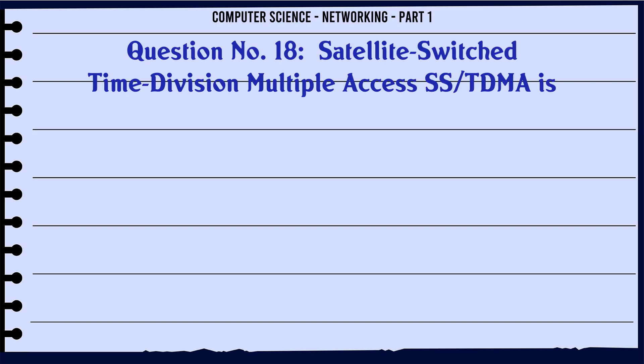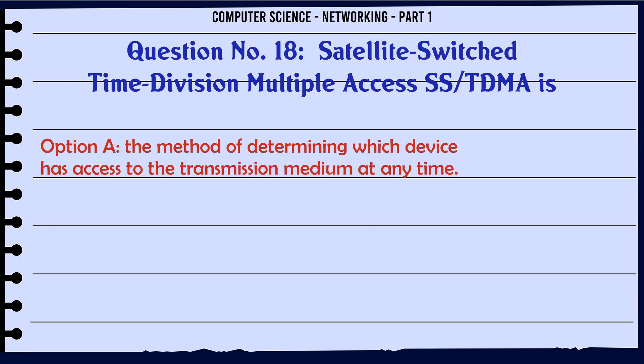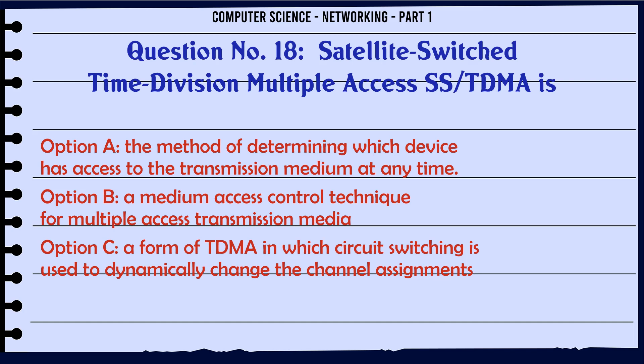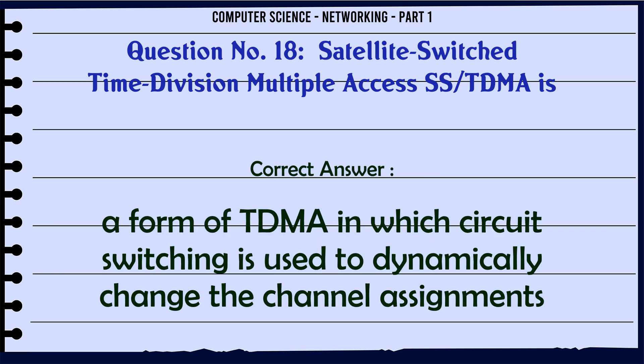Satellite switched time division multiple access (SSTDMA) is: A. A method of determining which device has access to the transmission medium at any time. B. A medium access control technique for multiple access transmission media. C. A form of TDMA in which circuit switching is used to dynamically change the channel assignments. D. All of the above. The correct answer is: A form of TDMA in which circuit switching is used to dynamically change the channel assignments.